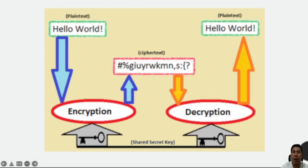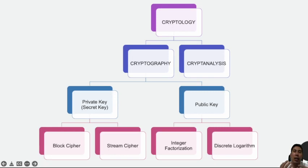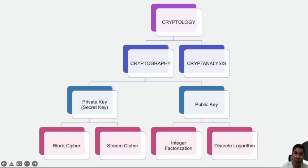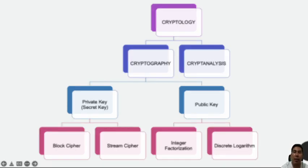To address this issue, cryptologists devised what they call an asymmetric or public key system. In this case, every user has two keys: one public key and one private key. Senders request the public key of their intended recipient, encrypt the message, and send it. When the message arrives, only the recipient's private key can decode it, meaning theft is of no use without the corresponding private key.